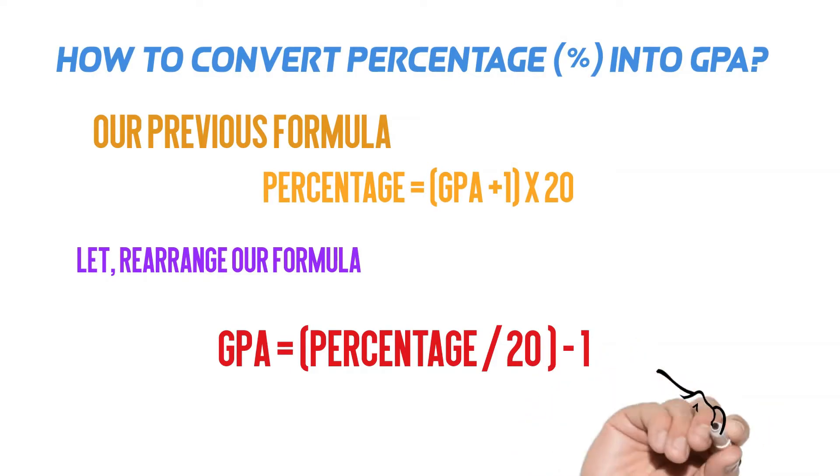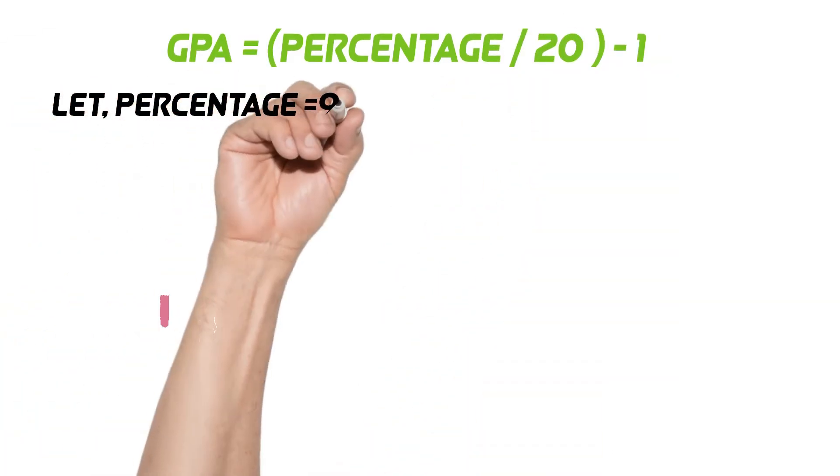If we rearrange our formula, we get GPA is equal to the percentage divided by 20 and less 1 from it. Now we explain this concept with the help of an example.